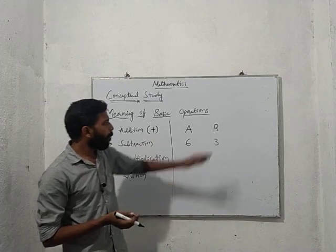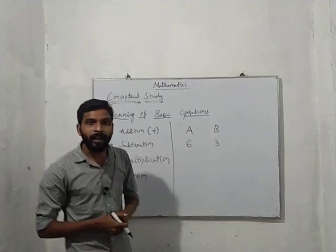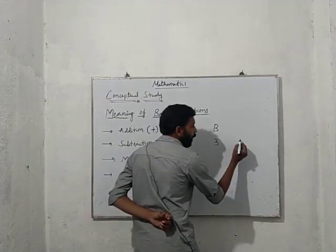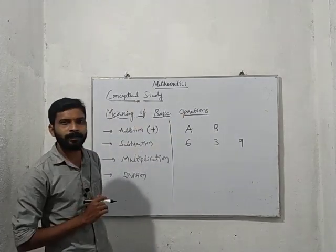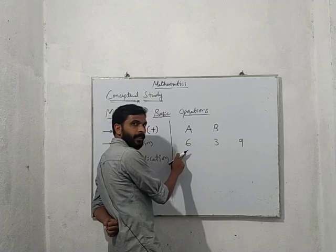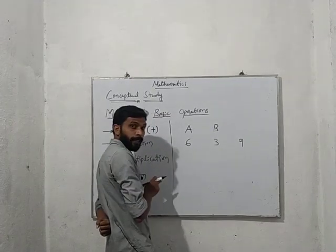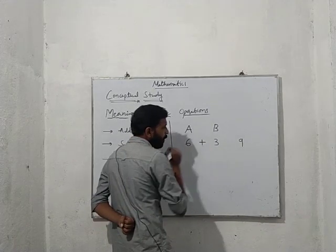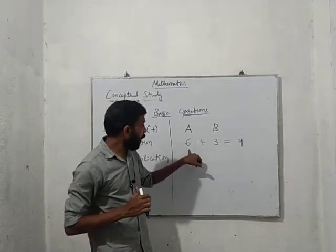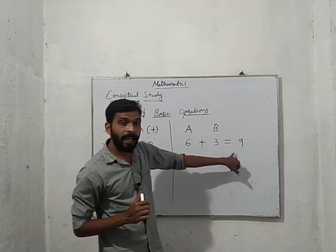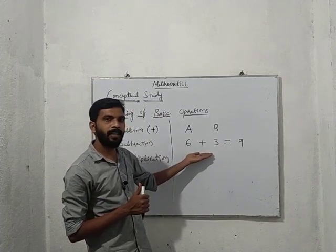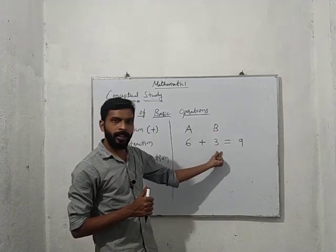But if I ask in total how many chocolates are there, you are going to give the answer nine. Why do you get nine? Six and three total is nine. We express this situation in mathematics as an equation: six plus three equals nine. In your schooling you learned this — A has six chocolates, B has three chocolates, total is nine.